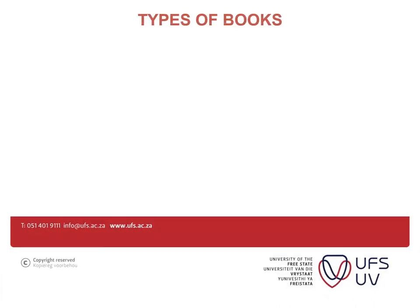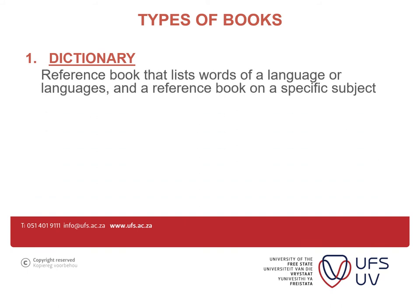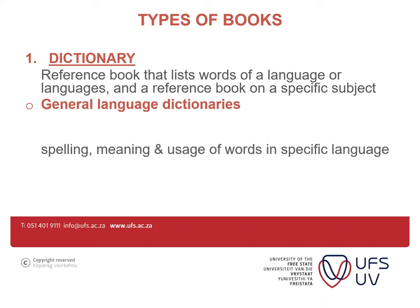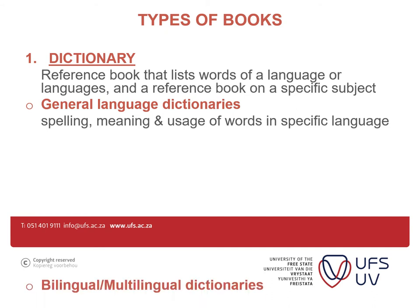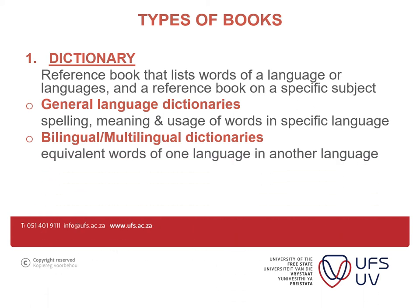On this slide, I'm going to talk about dictionaries. What is a dictionary? A dictionary is a reference book that lists words of a language or languages, and is also a reference book on a specific subject. We have different types of dictionaries. We have a general language dictionary that provides spelling, meaning, and usage of words in a specific language.